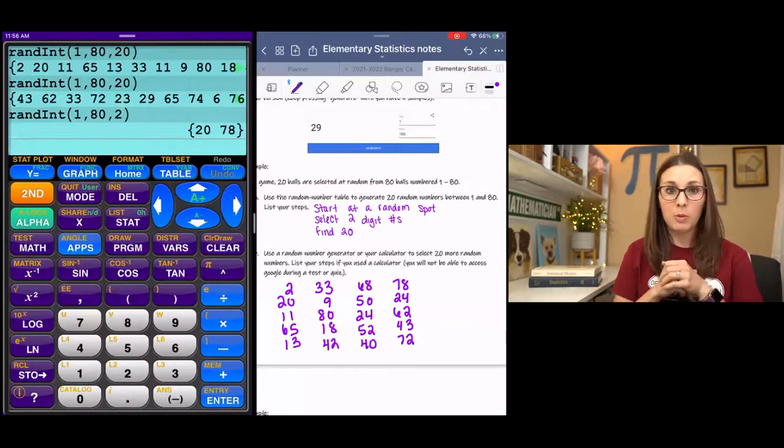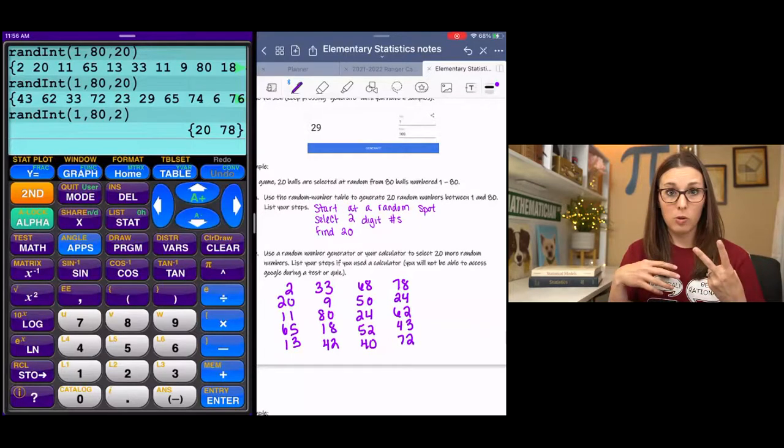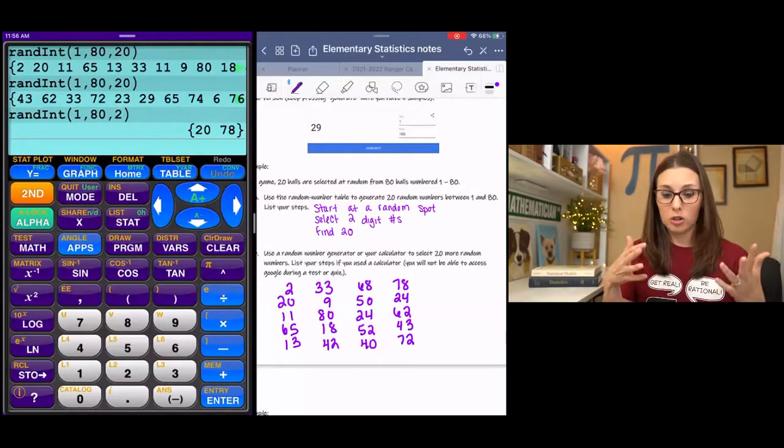So if you have repeating numbers, don't write them twice. Just go ahead and find, like in my case, I had two that were repeating. Just find two more to complete your set.